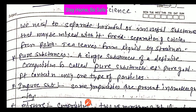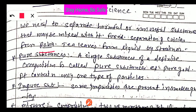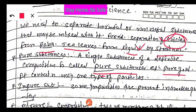We need to separate harmful or non-useful substances that may be mixed with a material. For example, separation of chillies from poha — you can easily pick chillies out. Tea leaves can be separated from liquid tea by a strainer. A pure substance is a single substance of definite composition, like pure gold with only one type of particles. Impure substances have impurities present in smaller quantities.